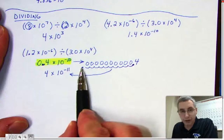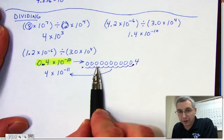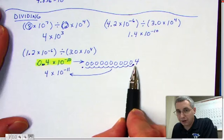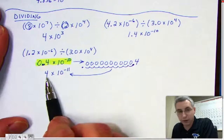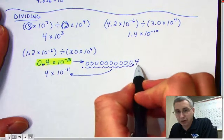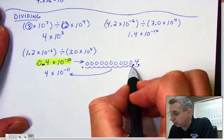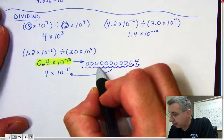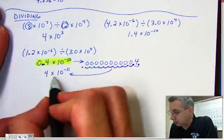Follow the procedure of starting on the left, scanning across until you pass a digit that's not zero. Right there — stop. Write down 4. And now from this location after the 4, count: 1, 2, 3, 4, 5, 6, 7, 8, 9, 10, 11. So the answer is confirmed as 4 times 10 to the negative 11th.